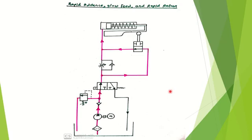In this circuit, the piston advances rapidly up to half stroke, then the speed of the piston reduces from that position to the end position. When the piston reaches the last position, it returns back to its original position with rapid speed. That is why it is referred to as rapid advance, slow feed, and rapid return. This is essentially a method of control of acceleration and deceleration — that is, speed control in a single acting cylinder.